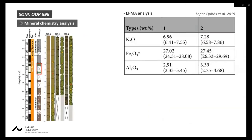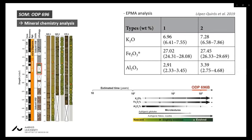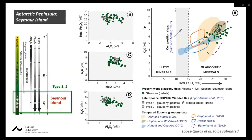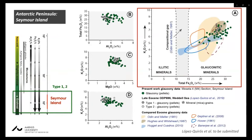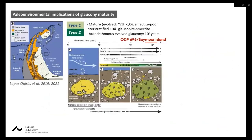According to mineral chemistry analysis, Type 2 displays slightly higher values in potassium, iron, and aluminium content than Type 1; from a mineral chemistry point of view, both Types 1 and 2 grains are evolved. In the Submeseta Formation, the same pattern holds: Type 2 shows higher K, Fe, and Al than Type 1. Chemical analysis of both ODP 696 and Seymour Island, plotted alongside other Eocene glaucony data, shows late Eocene glaucony Types 1 and 2 are therefore interpreted as mature, evolved grains based on textural, crystallographic, and mineral chemical properties.